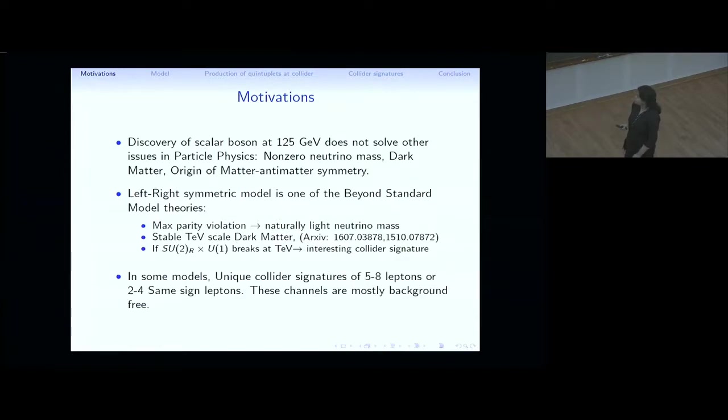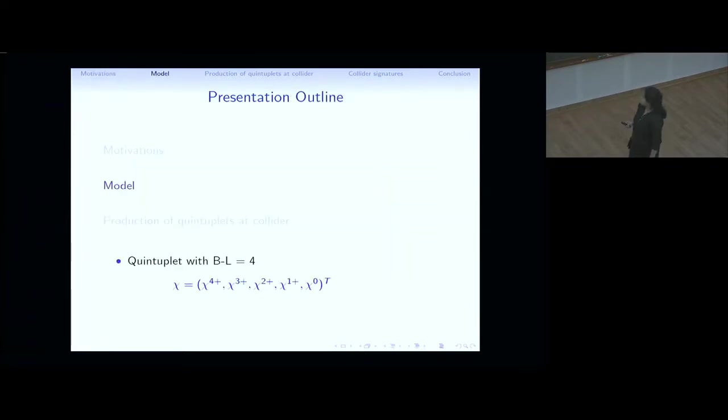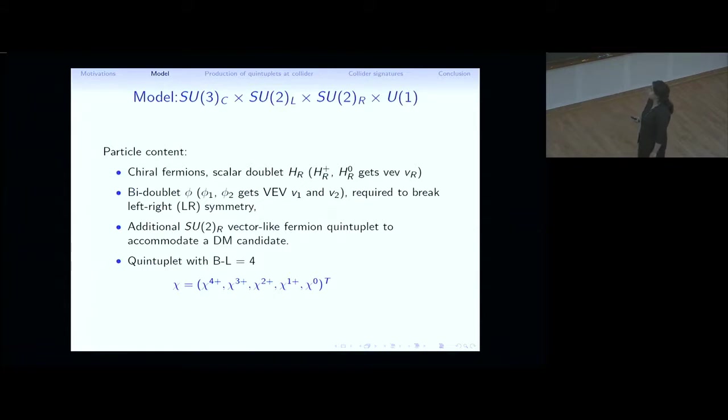In some of those models, the unique collider signatures like 5 to 8 leptons or sometimes 2 to 4 same sign leptons plus jets can be observed. And these channels are interesting and unique in the sense that these are mostly background-free. Next I'll talk about the model very briefly. This model is SU3C cross SU2L cross SU2R cross U1. And the particle content as described before is chiral fermions, the standard bi-doublet HR, where the neutral component gets the VEV VR. Then the scalar bi-doublet phi, where phi 1 and phi 2 gets VEV V1 and V2, which is required to break the left-right symmetry of the model.